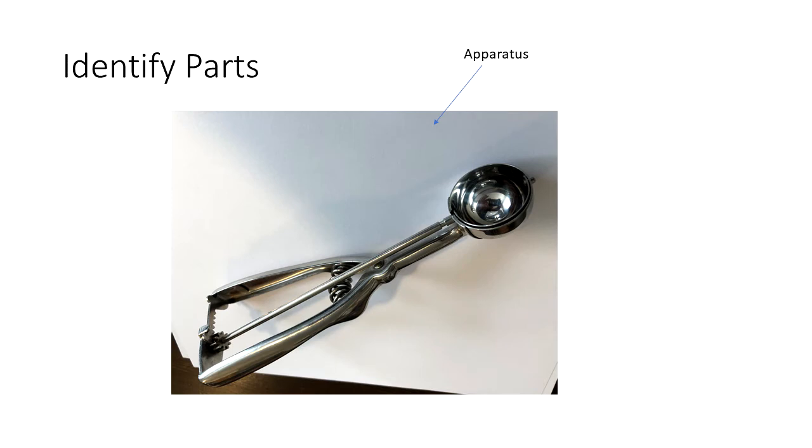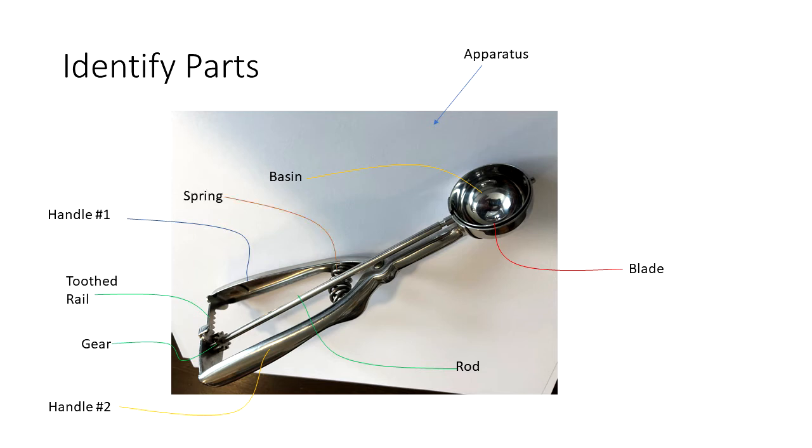So now let's identify some parts. We'll call the whole thing the apparatus and now we have two handles, the spoon section we'll call that a basin, the metal piece that moves to free the contents we'll call that the blade. Now we have the rod that moves the blade, the gear is attached to the rod, then we have the toothed rail that engages with the gear and the spring in between the two handles. We have a shaft portion extending from the handles and the basin is attached to the shaft portion. Another important piece is the pivot point at which the two handles are flexibly joined.